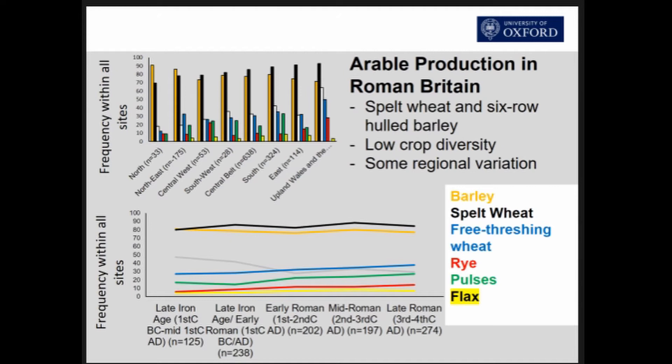Turning now to the results of the Roman Rural Settlement project, this project collated all excavated rural settlement data from Britain and produced summary archaeobotanical data. Looking at presence/absence data, spelt wheat and six-row hulled barley are the most frequent crops in all the different regions, with lower frequencies of emmer, free-threshing wheat, rye, oats, etc. Through time there is very little change — basically a very gradual increase in rye and pulses and a gradual decline in emmer, but nothing major at any point.